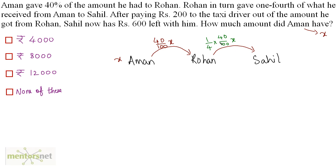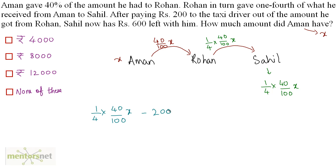Sahil has (1/4) × (40/100) × X. Sahil gives Rs 200 to the taxi driver and is left with Rs 600. So (1/4) × (40/100) × X − 200 = 600. Cancelling: 4 × 10 = 40, zeros cancel, leaving X/10 = 600 + 200 = 800.